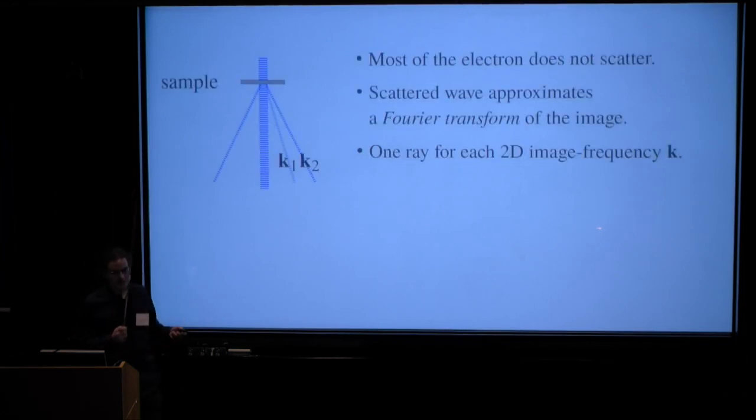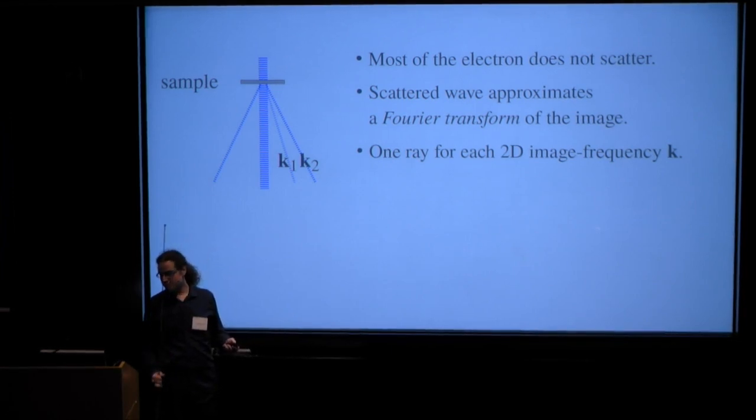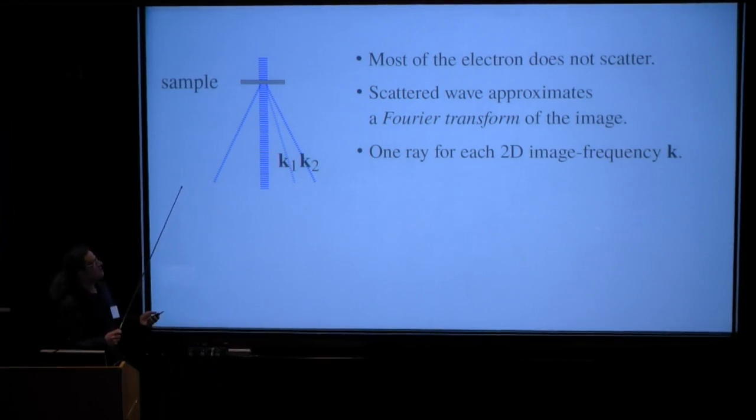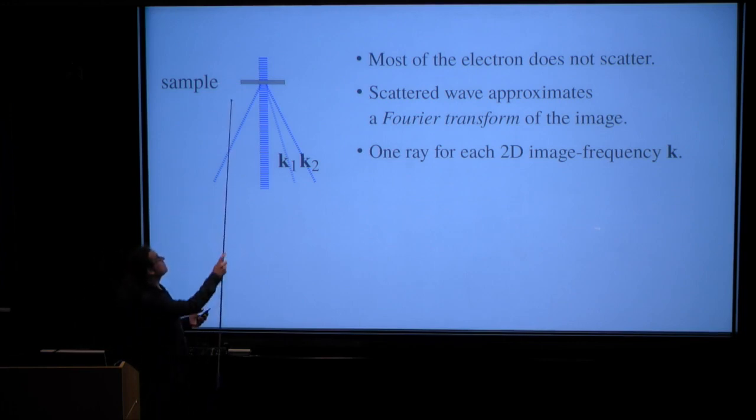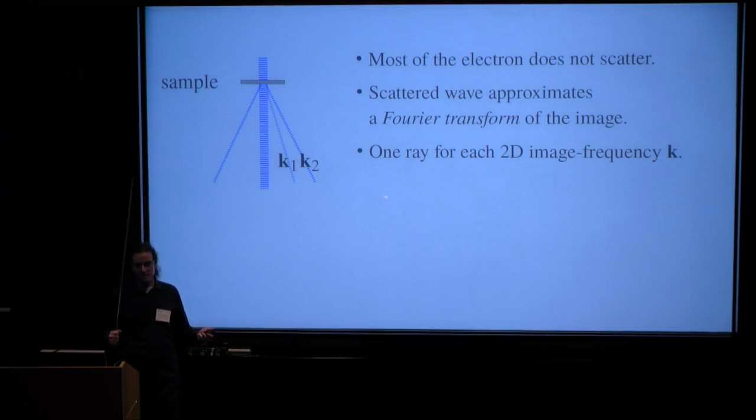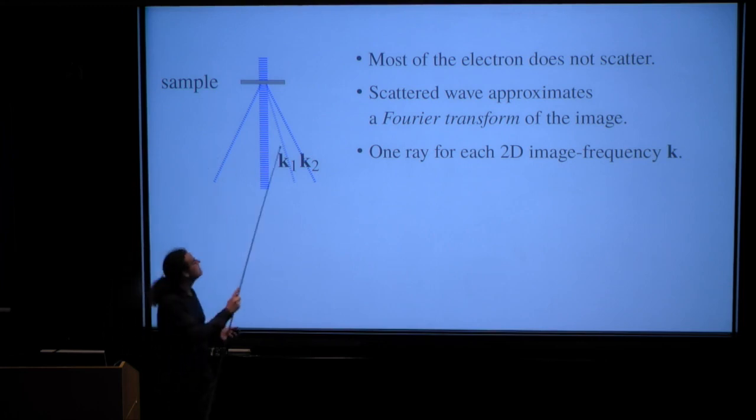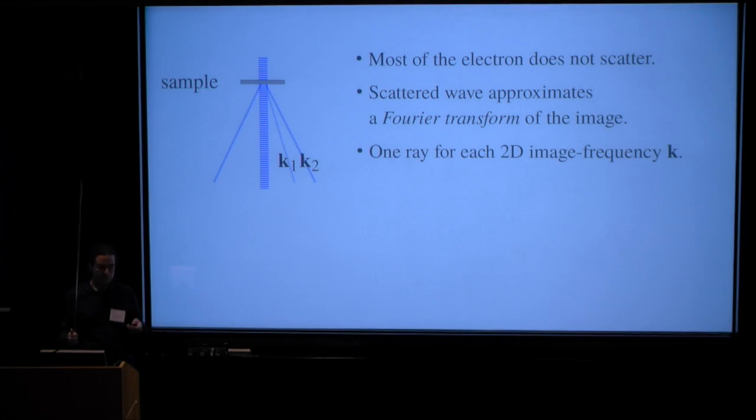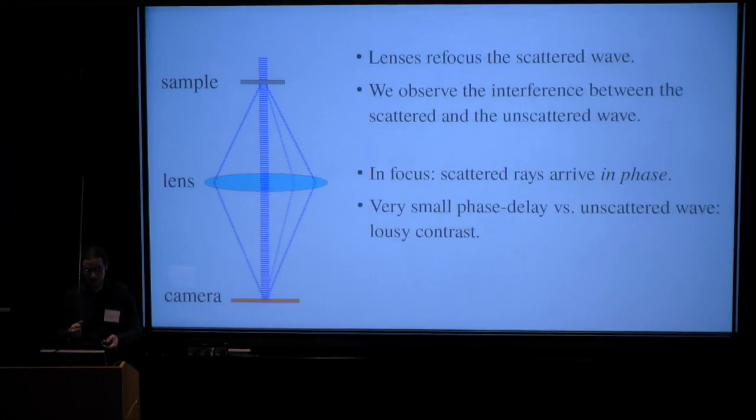In order to explain this I will have to go through some very simplified optics. In a TEM, when an electron passes through a very thin sample, most of the electron does not scatter. One small fraction of it scatters and essentially performs a Fourier transform of the image that it sees. So for every 2D spatial frequency k in the image, there is a corresponding ray moving that direction with that amplitude and phase. There are no discrete rays, of course, unless we look at crystals. It's a continuum of rays.